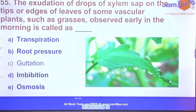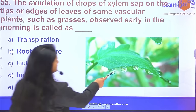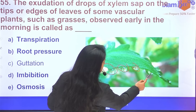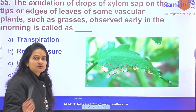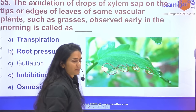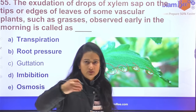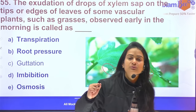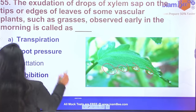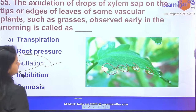Question 55: The exudation of drops seen on plants in the morning — this occurs when root pressure is high and transpiration is not occurring. This process is known as guttation.